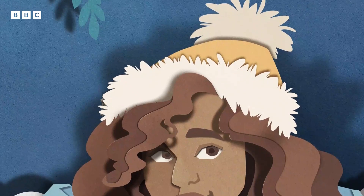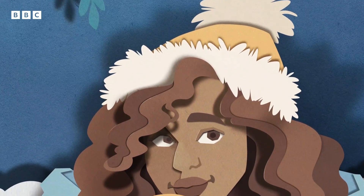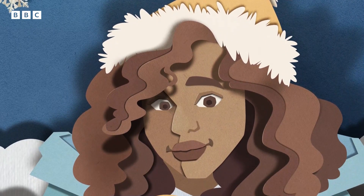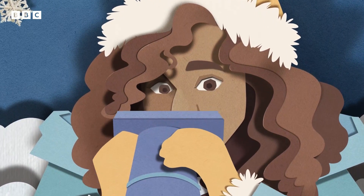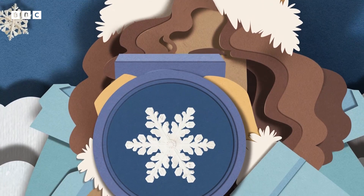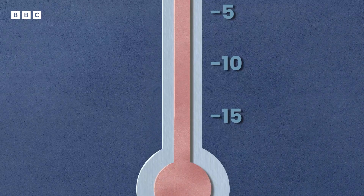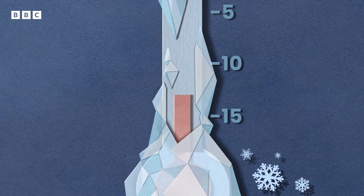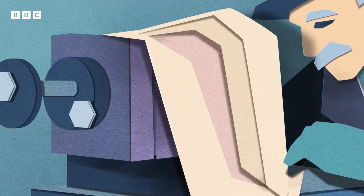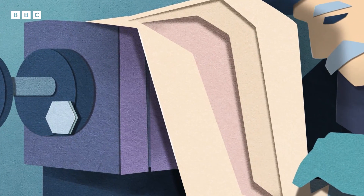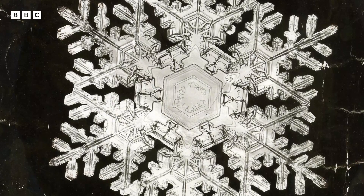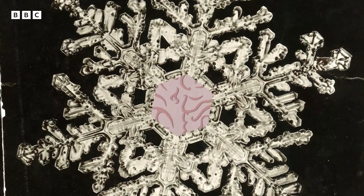If you speak to a snowflake photographer — there are just a handful in the world — they'll tell you it takes days and days out in the cold to get that money shot. The conditions have to be just right, between minus 15 and minus 13 degrees. But ever since Wilson Bentley, a farmer from the US state of Vermont, painstakingly took the first photos of stunning snowflakes in 1885, we've been hooked.